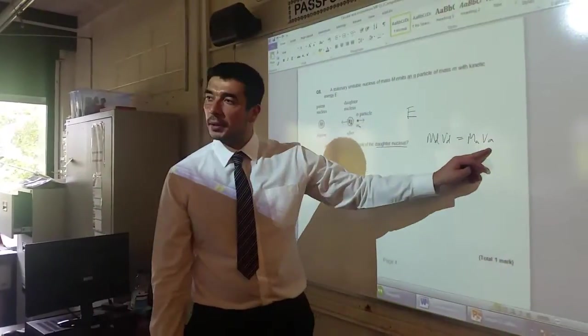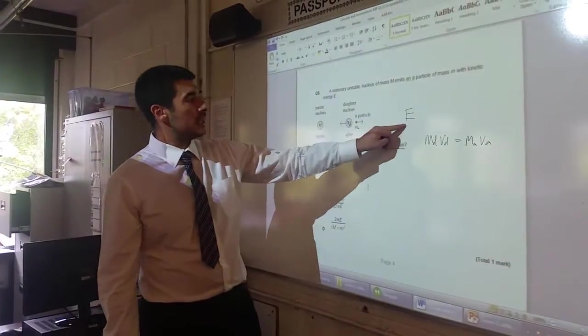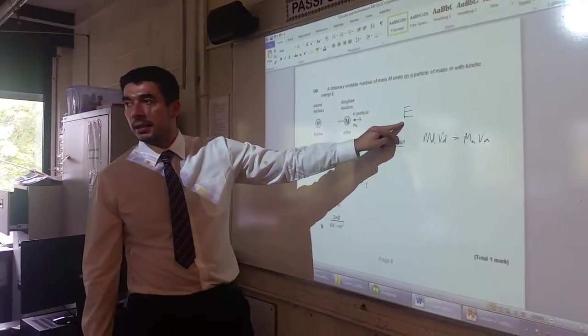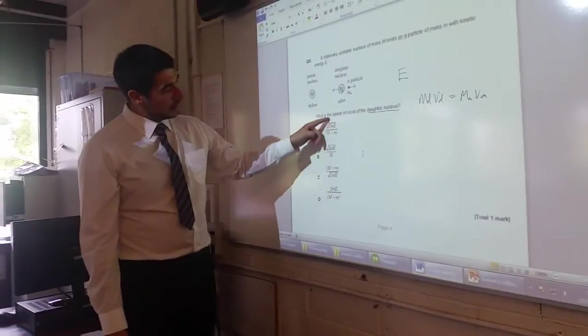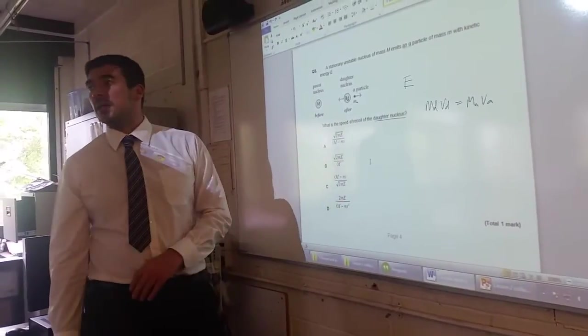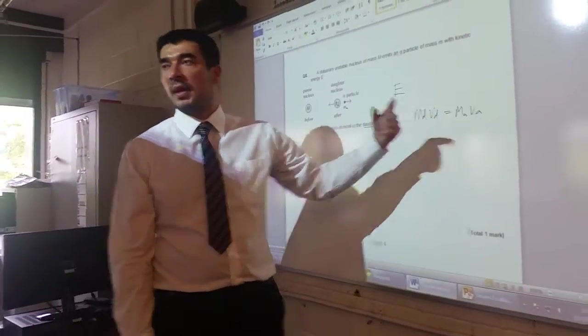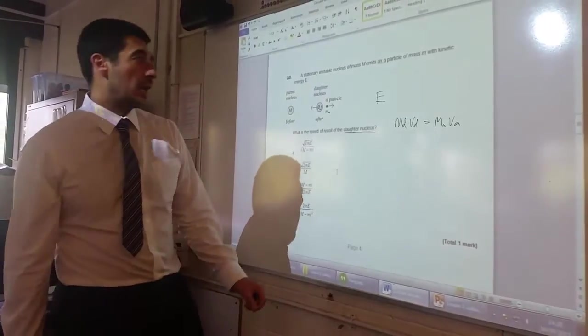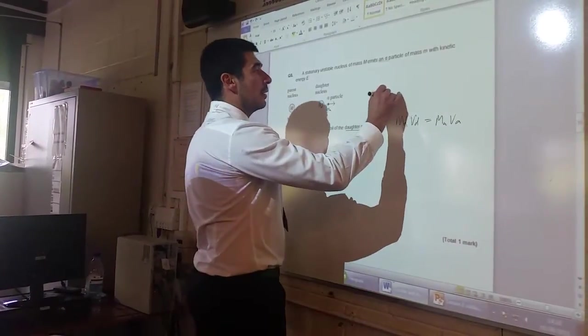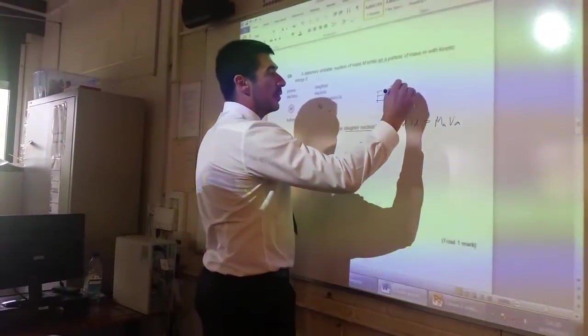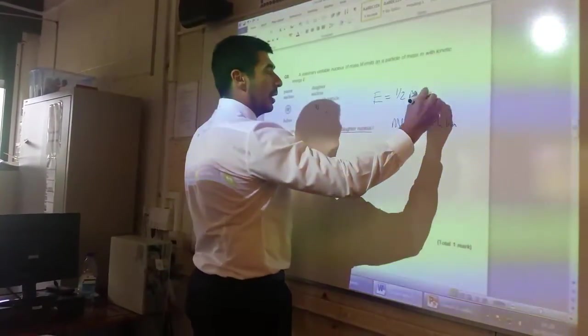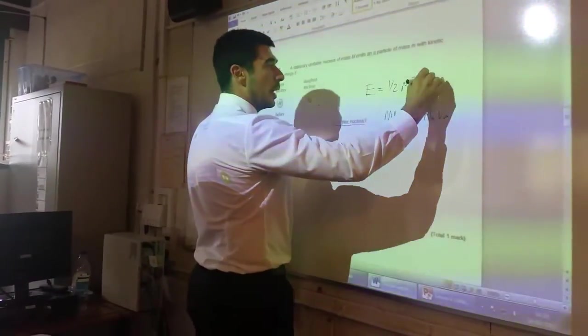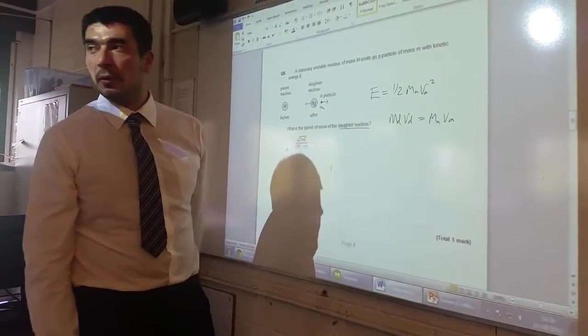Now the question doesn't give me the velocity of the alpha particle, but it does tell me that E is equal to its kinetic energy. And you can see from the answers that I've had to have expressed the velocity A in terms of E somehow. So that's my next little challenge, is to try and convert that. So if E is equal to half M V squared, this time the M will be the mass of the alpha particle, so half MA, VA squared, sticking with my naming conventions.